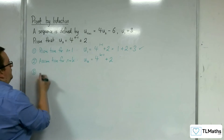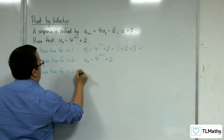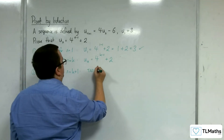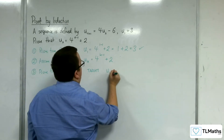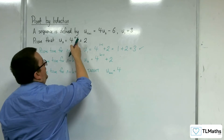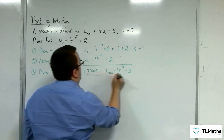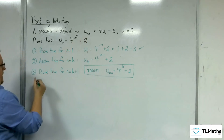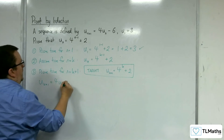Stage 3: we're going to prove that it's true for n = k + 1. Thinking about the target we have — our target is to get u(k+1) equalling 4^((k+1)-1), so 4^k + 2. If we can arrive at that, then we know we're there. So, u(k+1) is equal to 4·u(k) - 6.